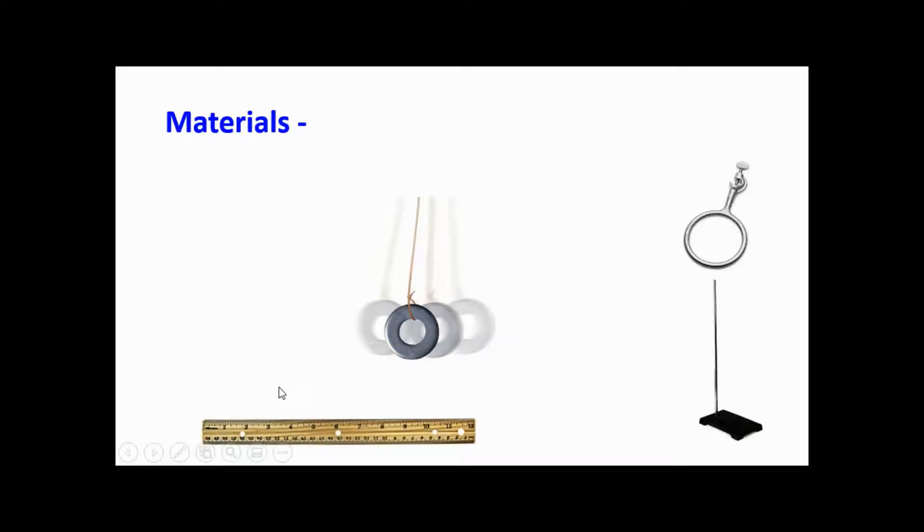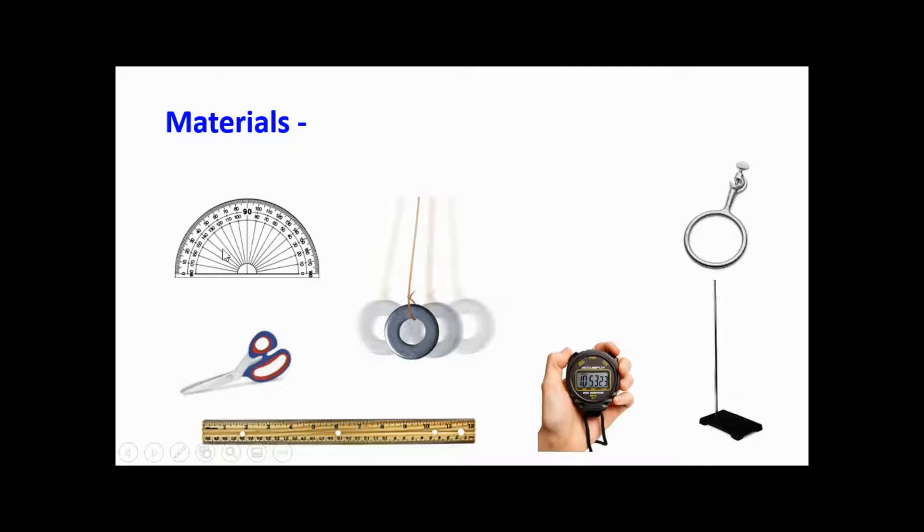The materials that you need for this lab are a lab stand, a ring clamp, three washers with the same mass, a ruler in centimeters, a stopwatch, a scissor, a protractor, and about 50 centimeters of string.